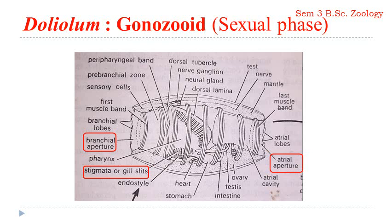The reproduction is highly specialized in Doliolum, and the whole life cycle is completed passing through two distinct phases. It is very clearly obvious from external features. The two phases are: a solitary sexual gonozoid, which alternates with a colonial asexual gregaria, or the ozoid. The gonozoid is a sexual individual and is barrel-shaped. It has both branchial and atrial apertures at opposite ends, and each aperture is surrounded by almost 10 to 12 lobes containing sensory structures.